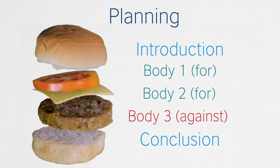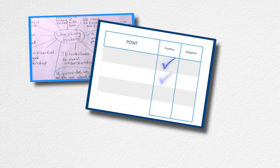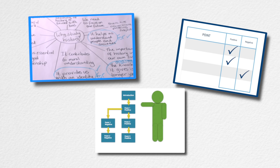Now we know our basic structure we need to choose a method to plan our essay. There are several different ways to do this such as a spider diagram, a positive and negative table, or a flowchart. Today we're going to use a spider diagram.